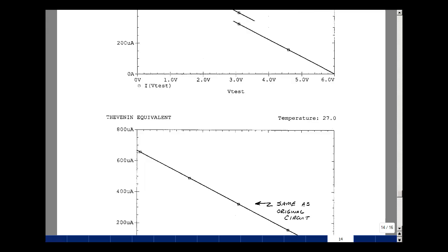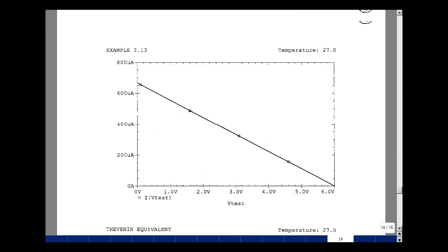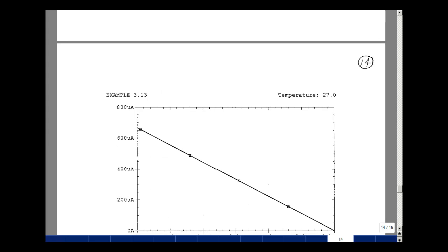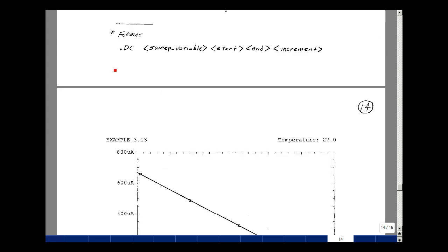There's one more thing I wanted to point out here at the bottom of page 13, the format of the DC sweep. I mentioned it briefly here, but so it begins with .DC. You get the sweep variable, the start point, the end point, and the increment. And this is supplemental problem 313.